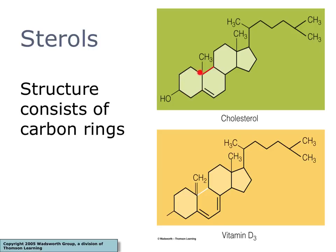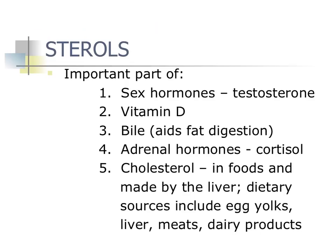Sterols have ring structures in their carbon chains, rather than straight or kinked chains like fatty acids. Sex hormones like testosterone and estrogen, vitamin D, bile that helps digest fats, adrenal hormones like cortisol, and cholesterol are all sterols. Cholesterol is found in foods and is also made by the liver. Egg yolks, liver meats, and dairy products are all sources of sterols — a very important class of lipids in your body.